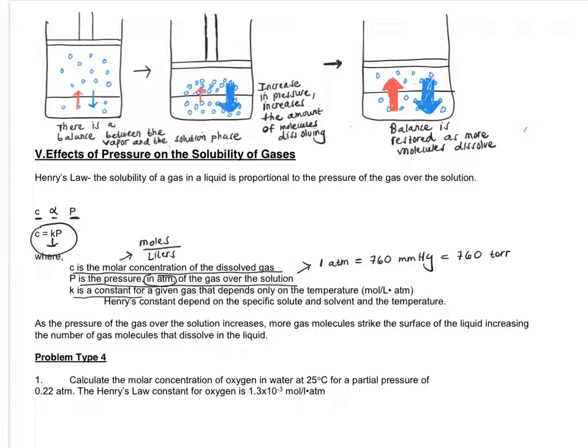Lastly, K is known as Henry's Law Constant. And this is given to you. It is dependent on the type of solvent and the type of solute, as well as the temperature. That's why the units are going to be the concentration times atmospheric pressure.